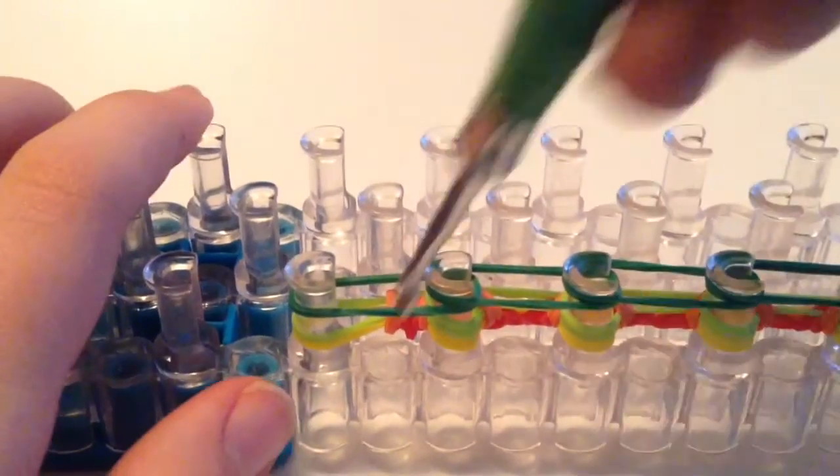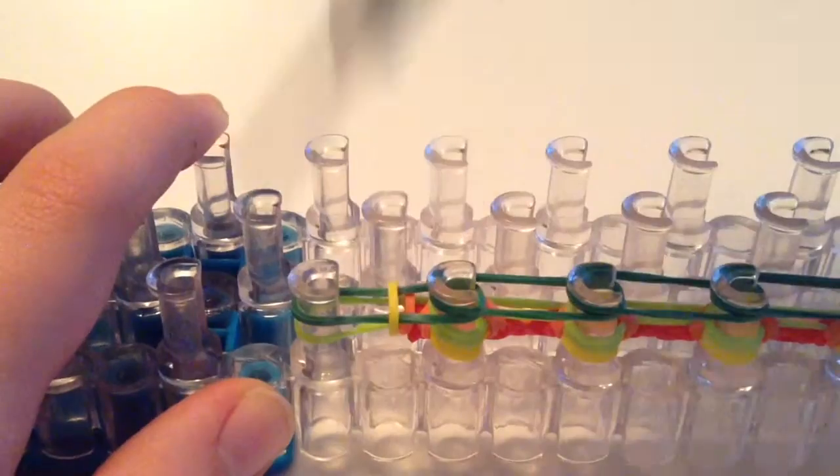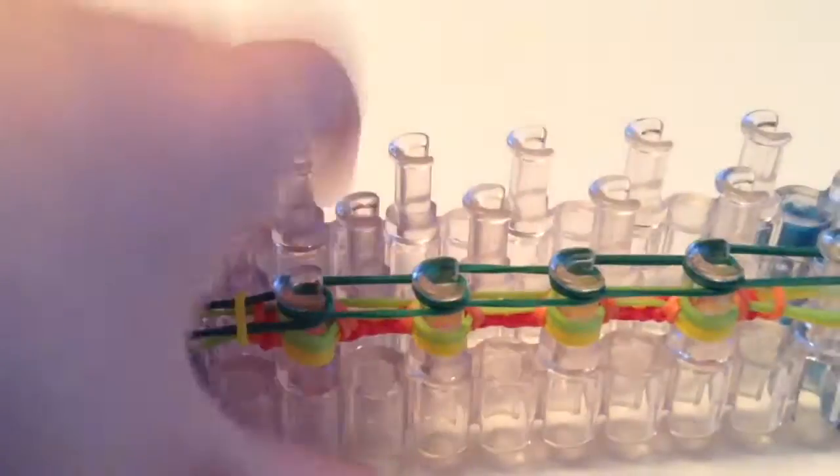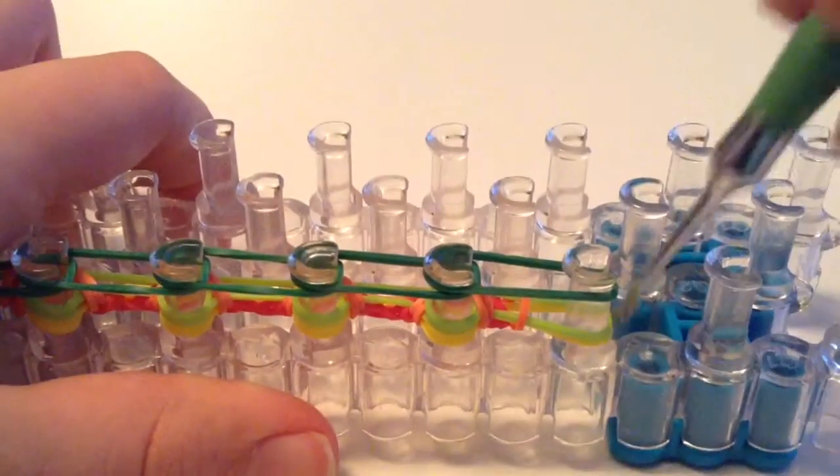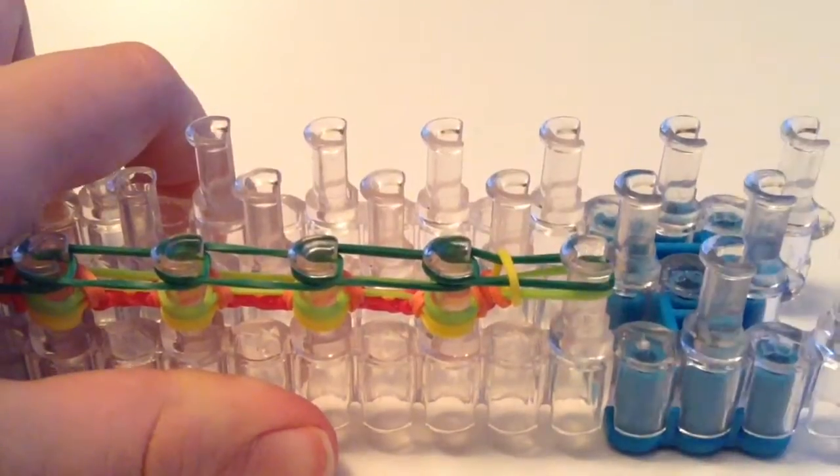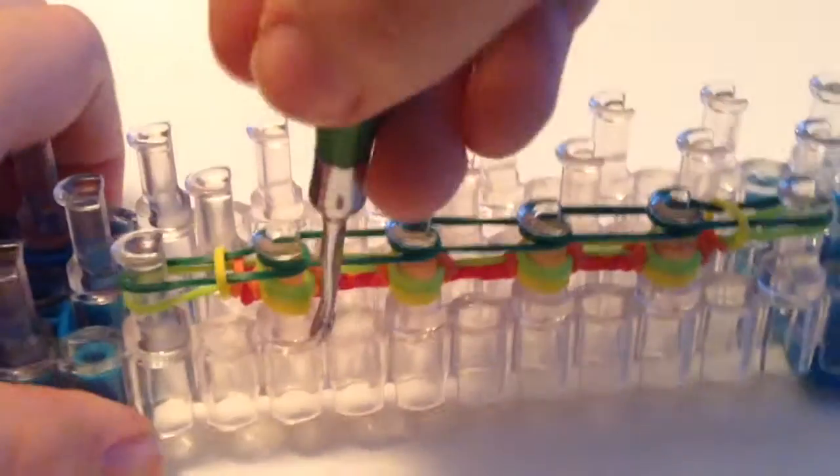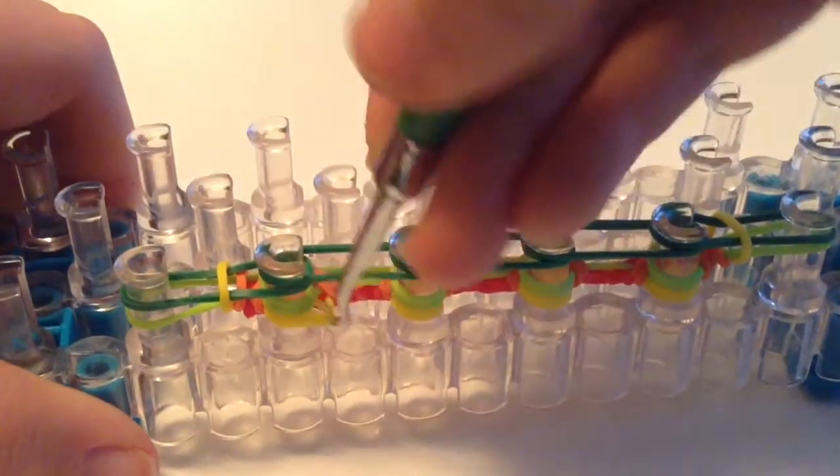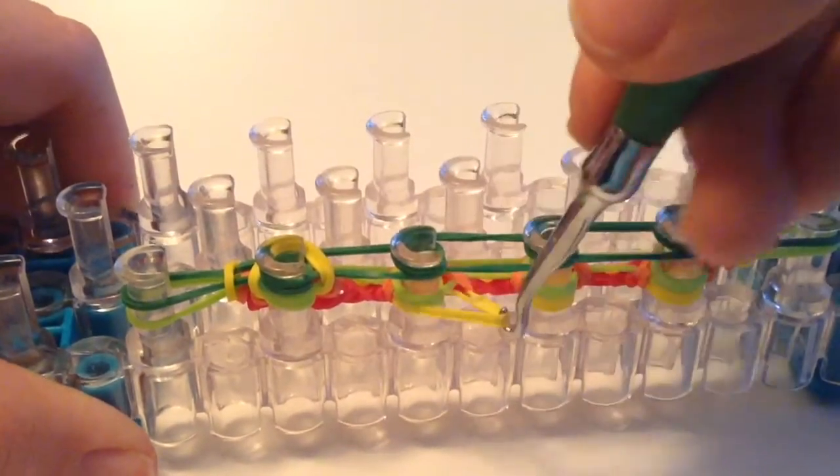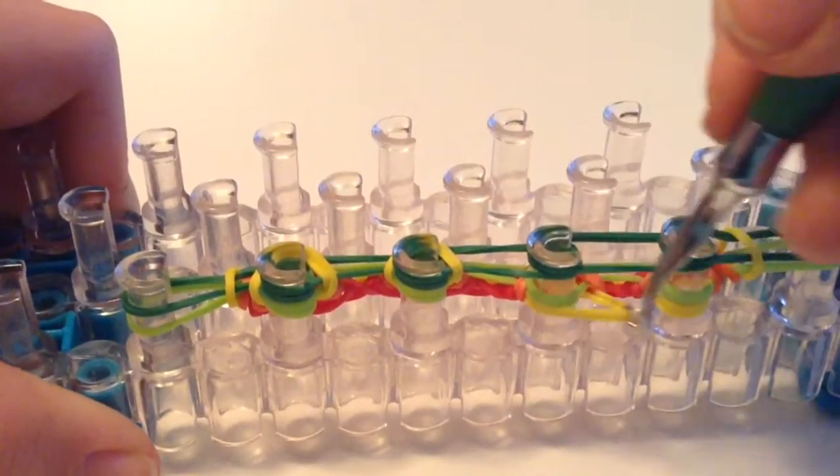And then take your hook. On the outer pins, you're going to have the single band, bottom band, and hook it up and over. Same on the right. Then on the inner pins, for me I have four. It doesn't really matter how many you have. You're going to hook over the bottom two bands, same color. For me it's yellow, so I'm hooking over all of the yellow bands.